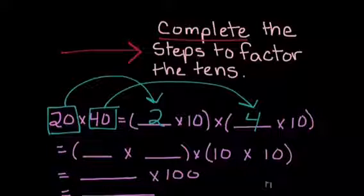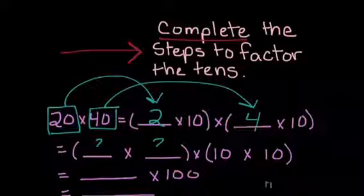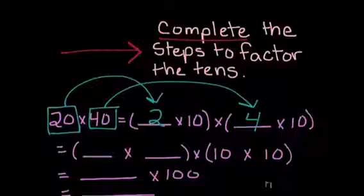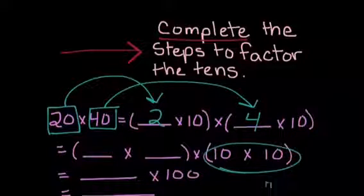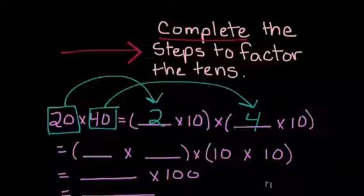The next row, we have parentheses blank times blank times 10 times 10. Well, I know 10 times 10 is 100. Here's our 10s. Something needs to be broken apart here.